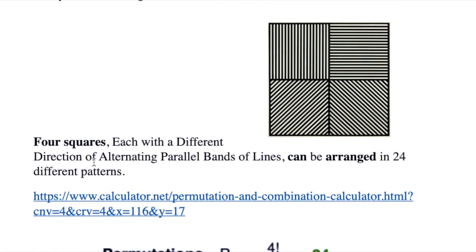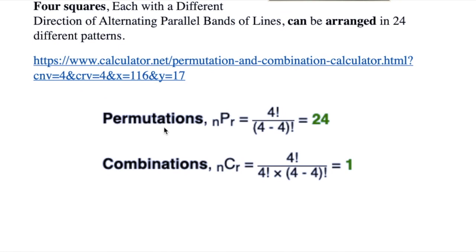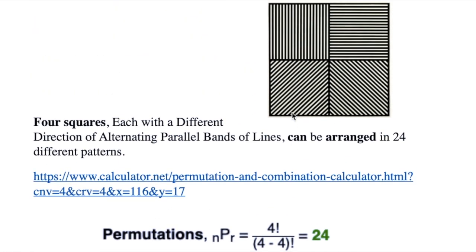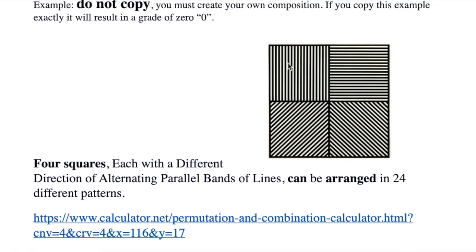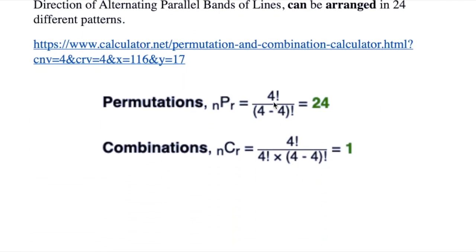Four squares, each with a different direction of alternating parallel bands of lines, can be arranged in 24 different patterns. Here's a link you can go to in order to figure out permutations. This is the actual formula for permutations of the number of squares — and the answer is 24.